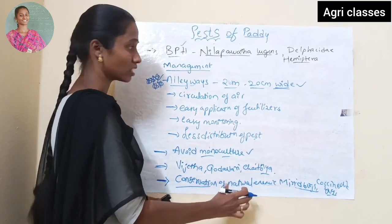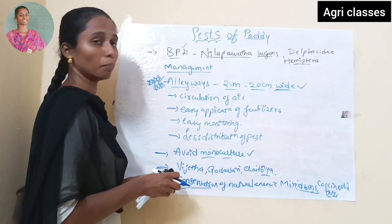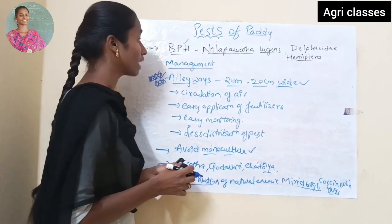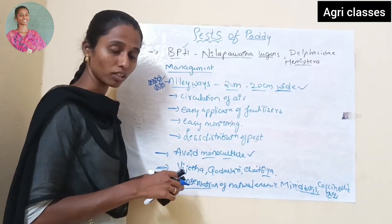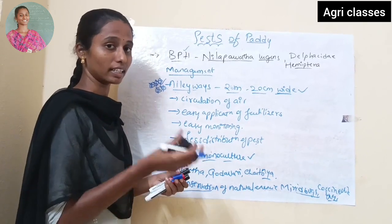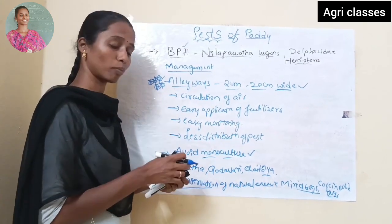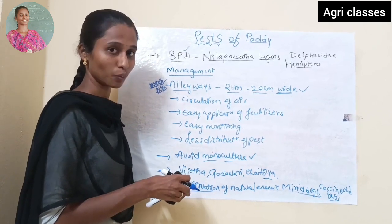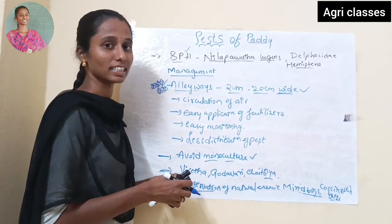So today I discussed about the pests of paddy: first I listed them out, then covered Yellow Stemborer, Gall Midge, and Brown Plant Hopper. If you like this video please like, share, and subscribe.